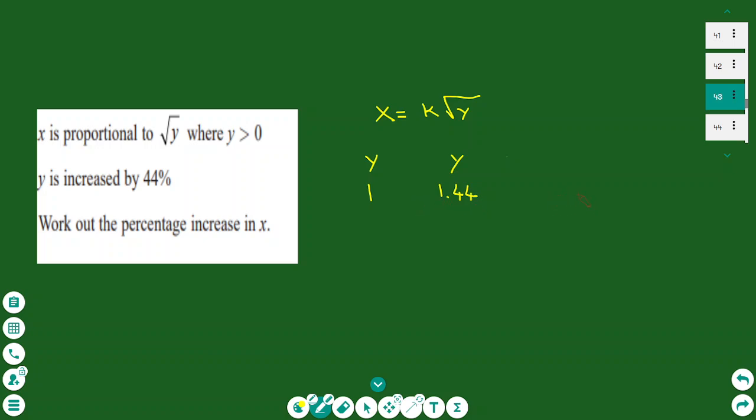I found the 1.44 as the multiplier is 1 plus the percentage, 0.44. This gives you 1.44. I put these numbers into the equation above and need to find the change in x. This is what the question is asking.